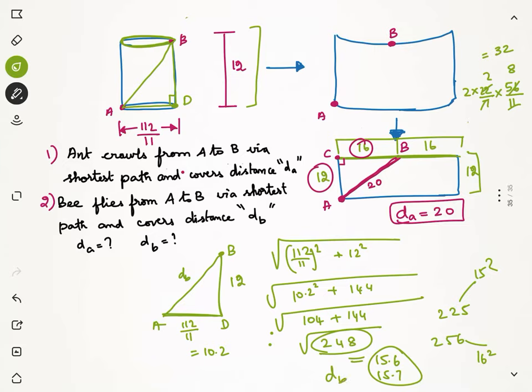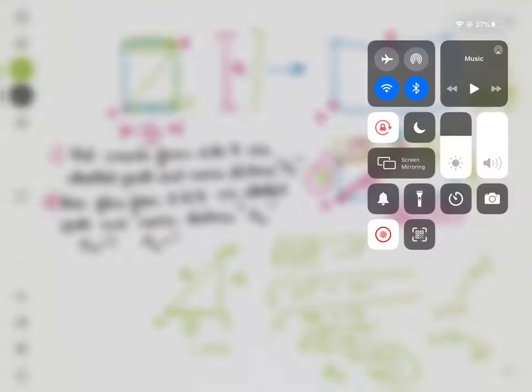The distance travelled by ant is 20 because it is travelling along the surface, which is a longer distance than the distance travelled by the bee which is just 15.6, 15.7. This distance is the distance travelled inside the volume. So, this will be the shortest possible distance between A and B.